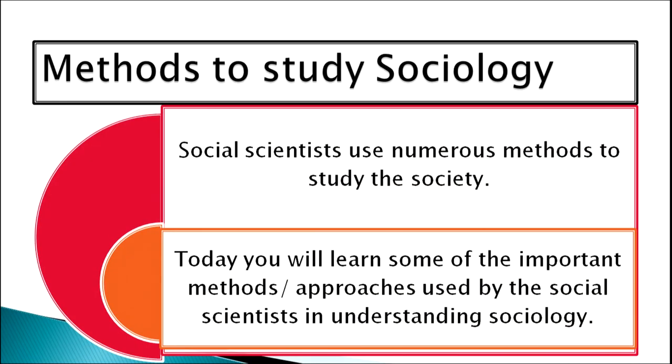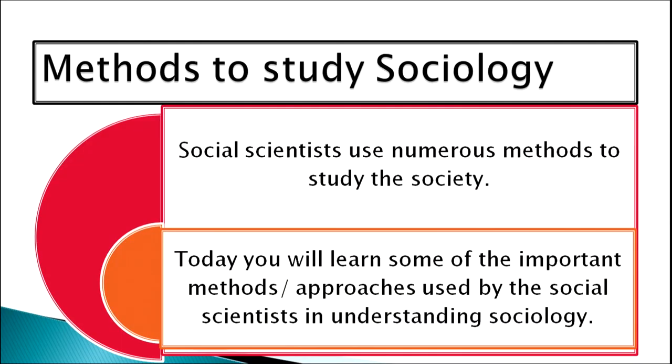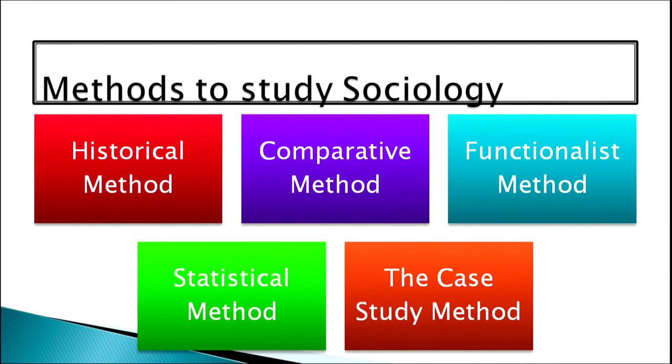There are various methods to study sociology. Social scientists use numerous methods like historical, comparative, statistical, and case study methods. Today you will learn some of the important methods and approaches used by the social scientists in understanding sociology: historical method, comparative method, functionalist method, statistical method, and the case study method.